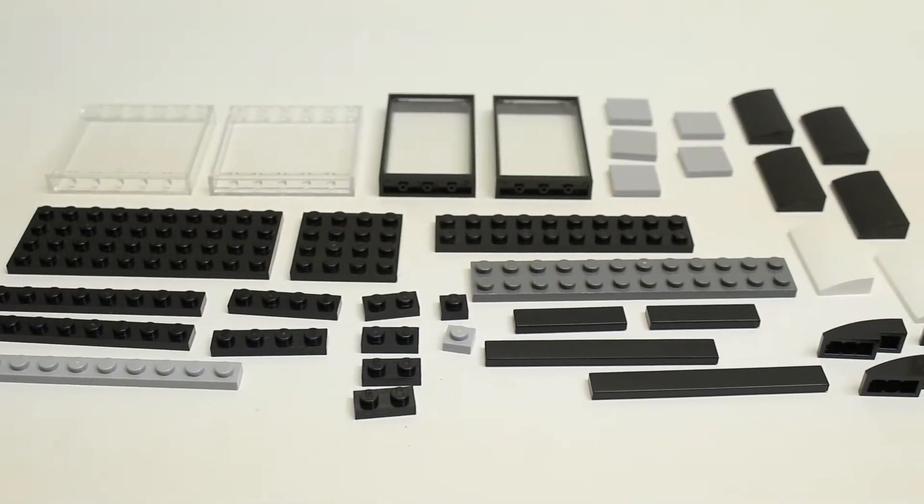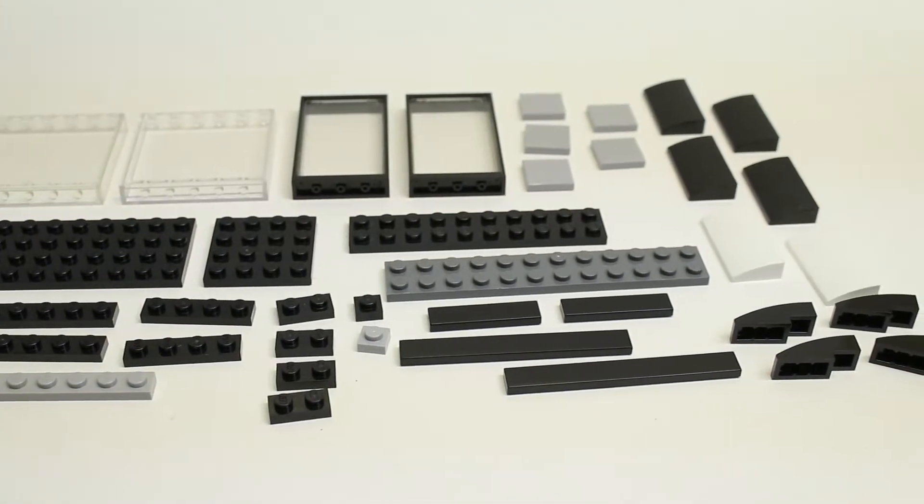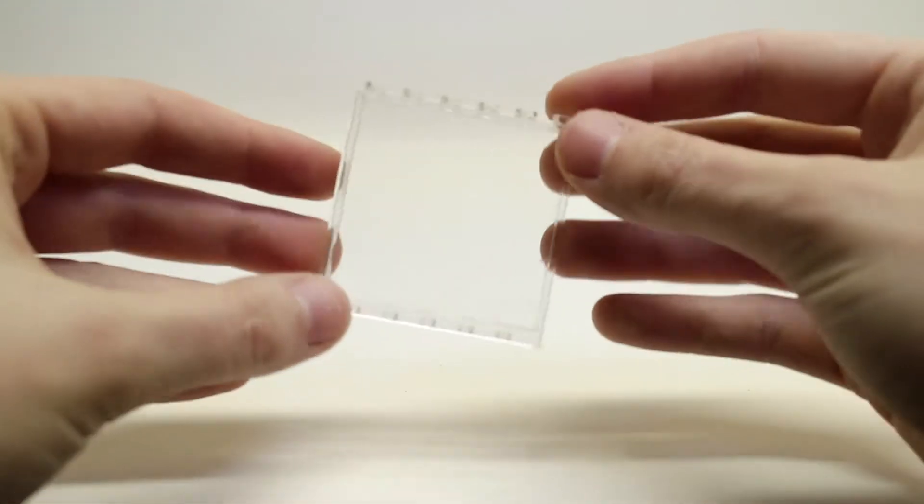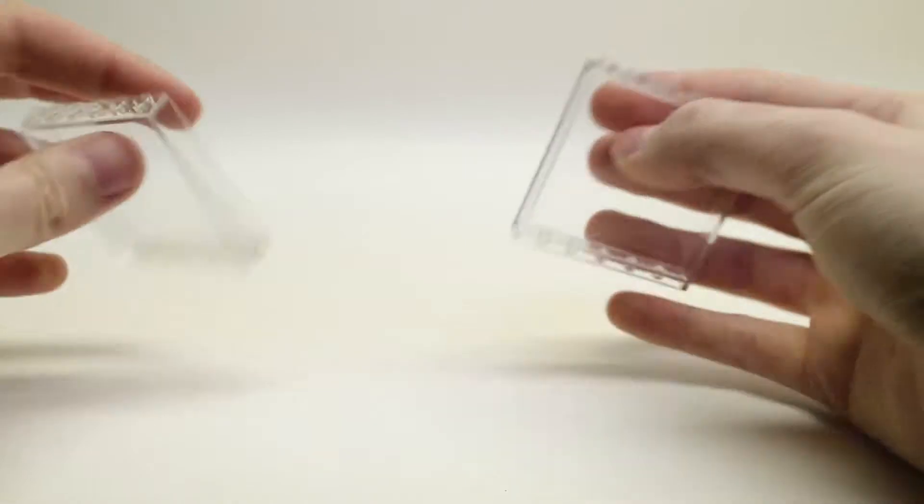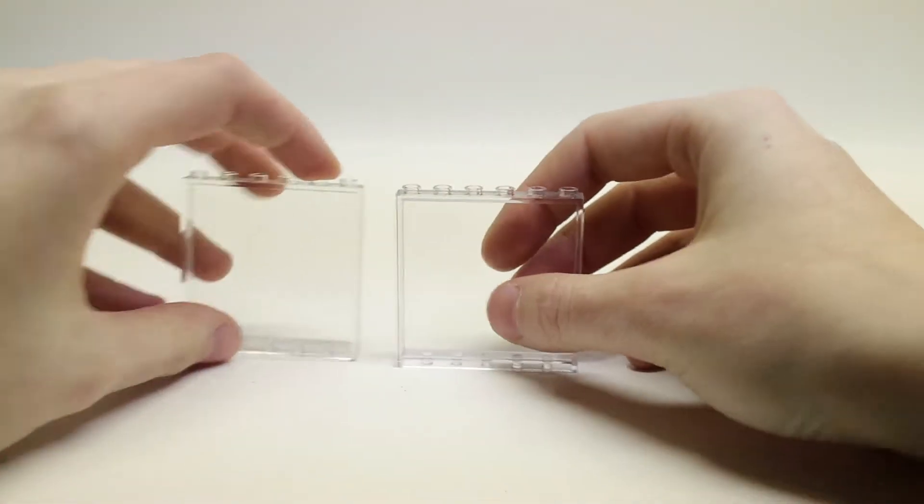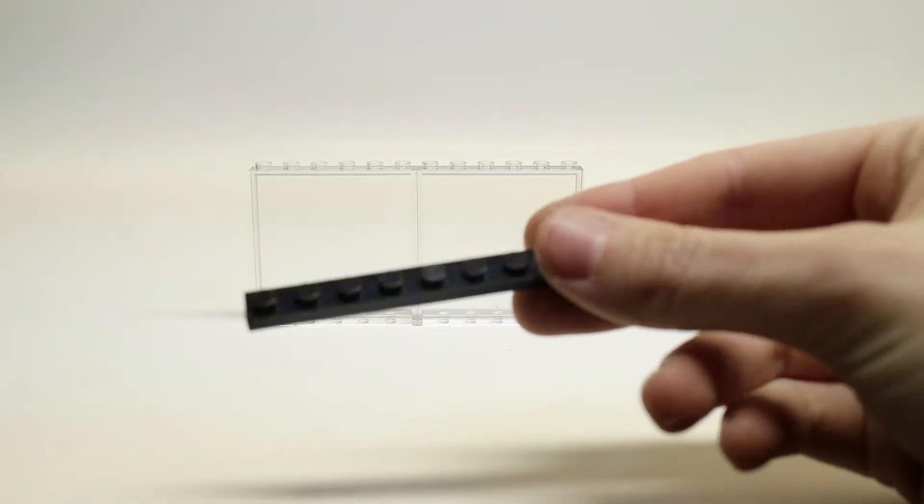Feel free to pause the video and find the pieces you're going to need. So first you're going to want to take your two clear window pieces and stand them like so. Then you're going to want to take one of your 1 by 8 black plates and a 1 by 4 black plate.